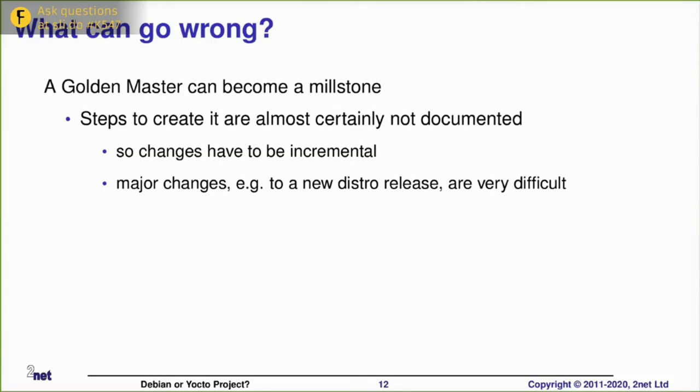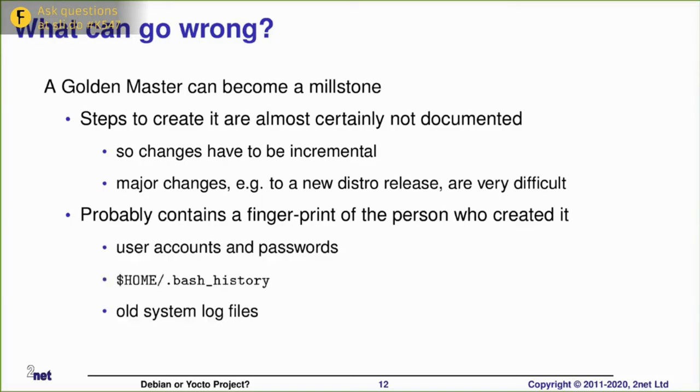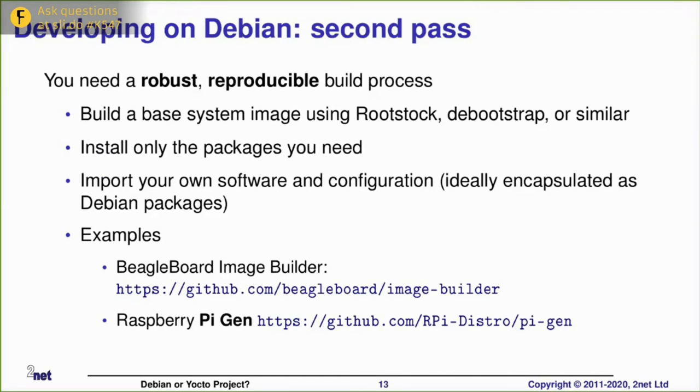If we want to completely replace the golden master with a new version based on a later version of the underlying operating system, that's hard work because we then have to go through and reproduce all the stages we went through earlier, remembering that some of them were not actually documented. So there'll be some trial and error and some fiddling around to get it right. There is a very big incentive to stick with the golden master as it is using the version that was shipped. Not only that, when you create such a thing as a golden master in this way, there's usually some kind of fingerprint left by the person who created it.